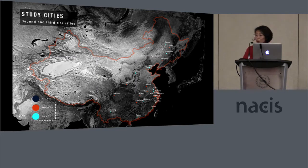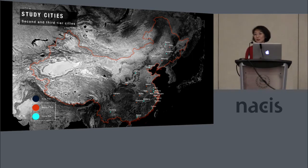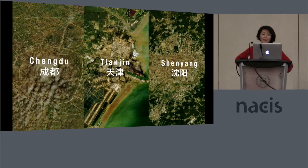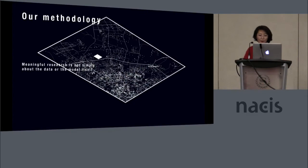We collected data for 22 different cities across China, most of which were second and third tier cities. We focused more on lower tier cities because you generally see this underutilization condition happening more in developing cities rather than bigger cities like Beijing or Shanghai. We focused on three test cities: Chengdu, Tianjin, and Shenyang. One of the main points I want to emphasize is that we used a mixed methods approach when addressing the question of ghost cities.